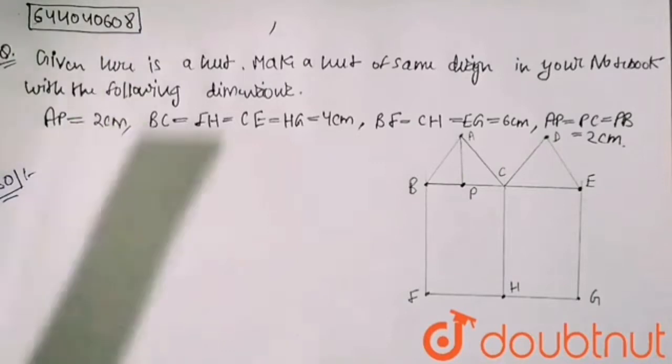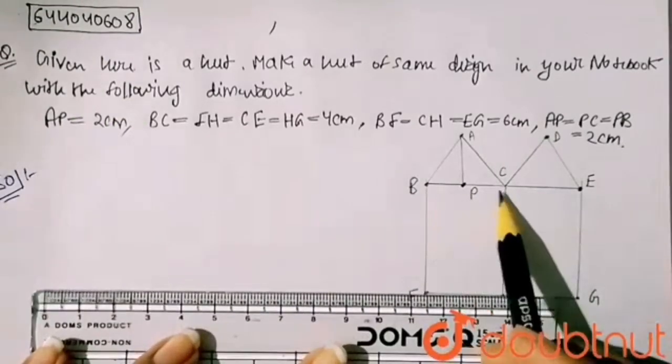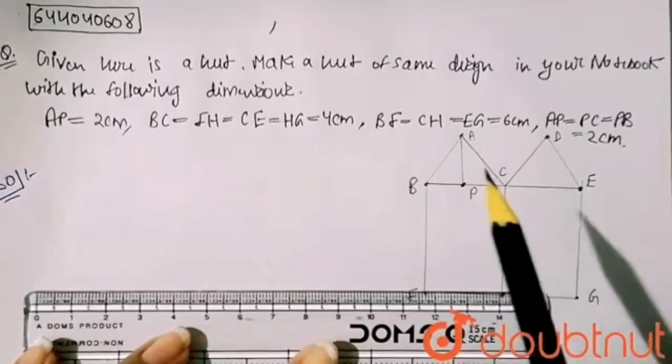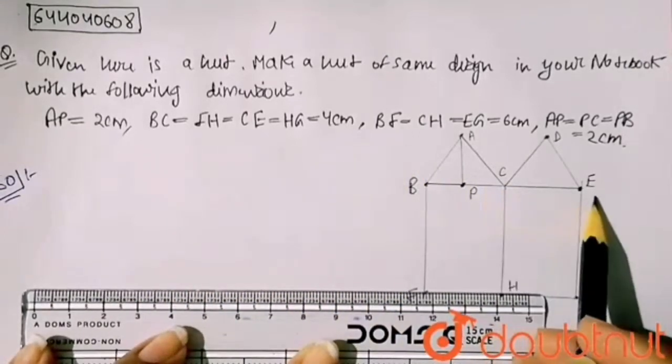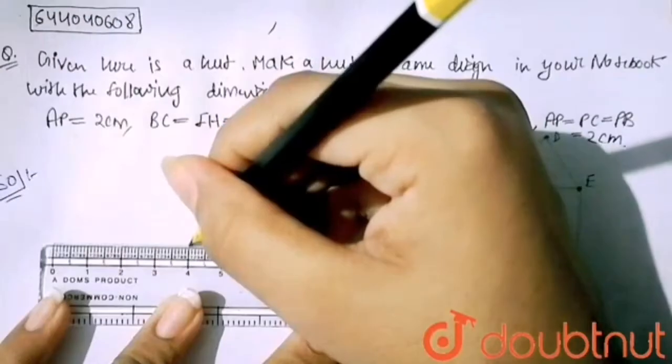So here I will draw it with the help of scale. First, we will draw BC. BC is 4 cm and CE is also 4 cm, so directly I will draw an 8 cm line. Here you can see this is my BC and this is my CE.